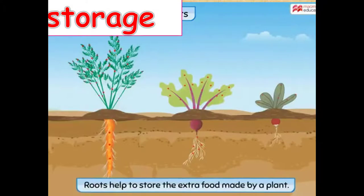The parts are roots, stem, leaves, flowers, and fruits. We will remember this with all functions of parts of plants. This means that extra food a plant needs a place to be stored. Some plants store extra food in roots like carrot, radish, and beetroot.